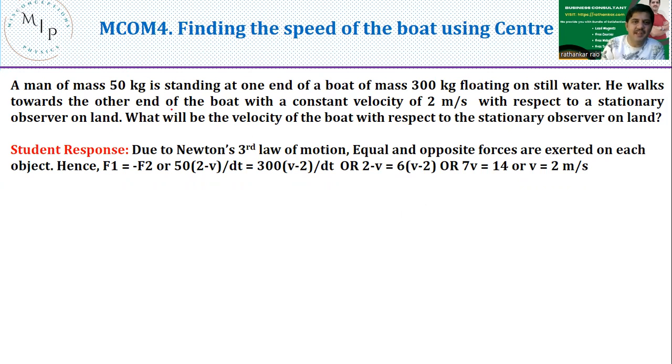A man of mass 50 kg is standing on the end of a boat of mass 300 kg floating on still water. So you have a boat, and a man is standing here at one end of the boat. The mass of the man is 50 kg, mass of the boat is 300 kg. Remember the boat is standing on water, not on land.